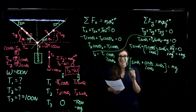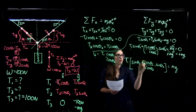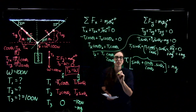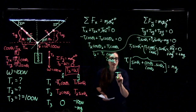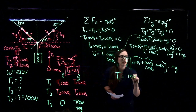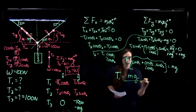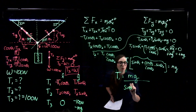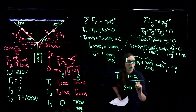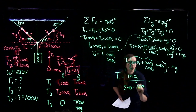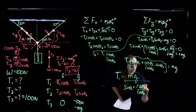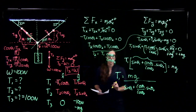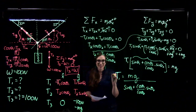Solving for T1 algebraically: move mg to the other side, then factor out T1 from both terms. So T1 times (sine theta1 plus cosine theta1 over cosine theta2 times sine theta2) equals mg. Dividing both sides by that whole expression: T1 equals mg over (sine theta1 plus cosine theta1 over cosine theta2 times sine theta2). We solved it algebraically so we can plug in any different mass or angles and still get T1 directly.